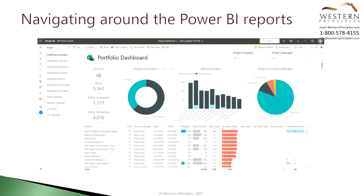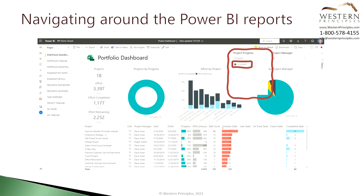Most Power BI reports provide filters and slices. The filters typically show up at the top and you can use these to quickly zero in on the data you want. Additional filters and slices can be added based on your configuration. For example, you might want to add metadata to each project such as the project sponsor or customer name. Additionally, if you use the Microsoft Project Accelerator, you might add filters that would include programs, project score, priority, and others.